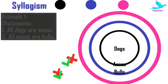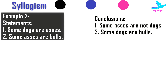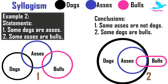Example 2. The statements are: Some dogs are asses, and some asses are bulls. The conclusions are: 1. Some asses are not dogs. 2. Some dogs are not bulls. Here again, the colors black, blue, and magenta represent dogs, asses, and bulls. Looking at statement 1, there are two kinds of diagrams which are possible for 'Some dogs are asses.'